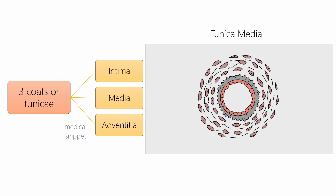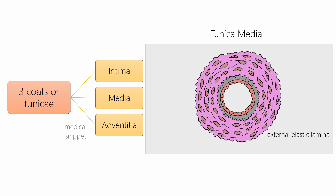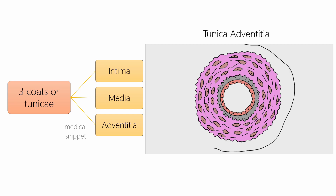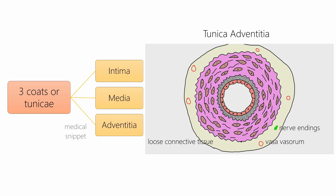The media is separated from the adventitia by the external elastic lamina. Tunica adventitia is the outermost layer of the arterial wall. It is made up of loose connective tissue, vasa vasorum, and nerve fibers.